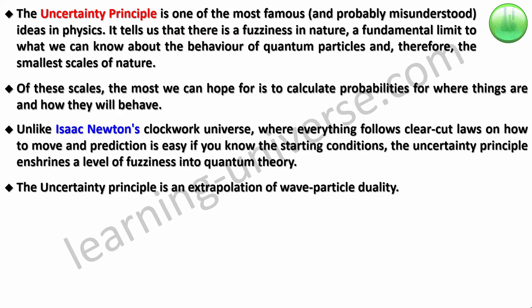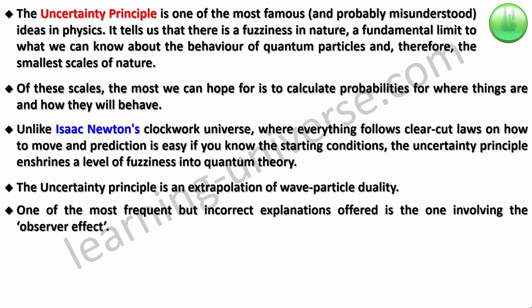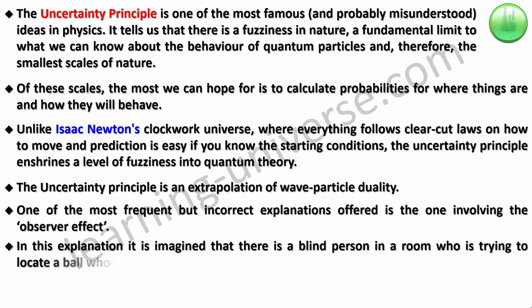One of the most frequent but incorrect explanations offered is the one involving the observer effect. This is one of the most classical examples of trying to explain quantum mechanics through the eyes of a classical mechanics person. In this explanation, it is imagined that there is a blind person in a room who is trying to locate a ball whose velocity is known.